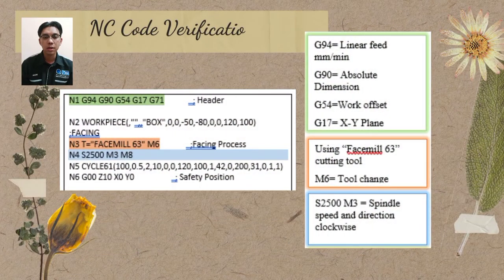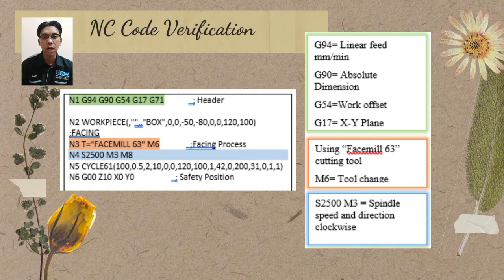Hi, Assalamualaikum. I am Muhammad Haziq, and I will explain about our NC Code. Our NC Code started with the header in the green highlight. This green highlight shows the linear fit, absolute dimension, work offset, and XY plane.